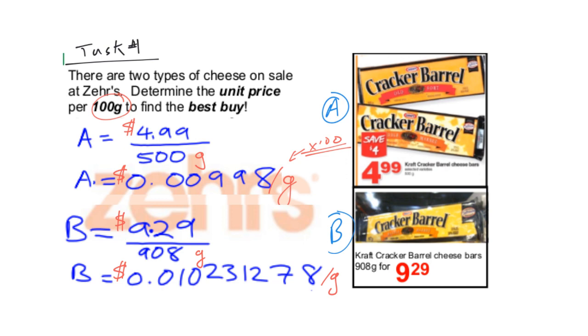You'll notice that this one here is less than this other one. So therefore, A is the cheaper buy. And we're done.